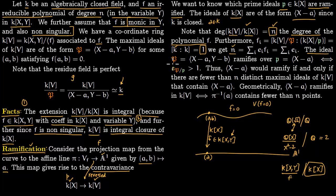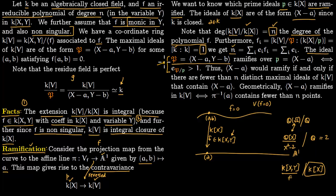The ideal (x−a, y−b) will ramify over (x−a) if and only if its ramification index e is greater than 1, meaning (x−a) must appear squared in the factorization. So (x−a) ramifies if and only if there are fewer than n distinct maximal ideals of kV containing (x−a).